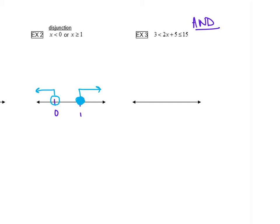So first thing we're going to do is subtract 5. Well, if we subtract 5 from the middle, you have to subtract 5 from everywhere, left and the right side. Your 5's cancel. 3 minus 5 is negative 2, is less than 2x, which is less than or equal to 10.